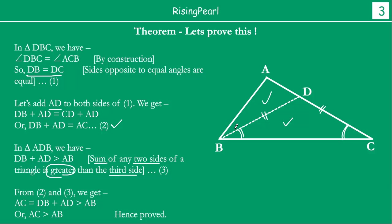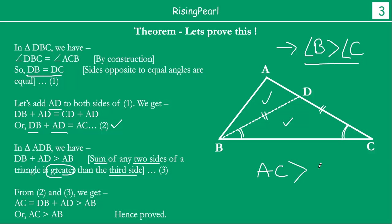We have already proved that BD plus AD is greater than AB. And we have already replaced BD plus AD by AC. So we see that AC is greater than AB. We have proved this by knowing that angle B was greater than angle C — which is what was given — and now we have proved that AC, the side opposite to angle B, is greater than AB, the side opposite to angle C.